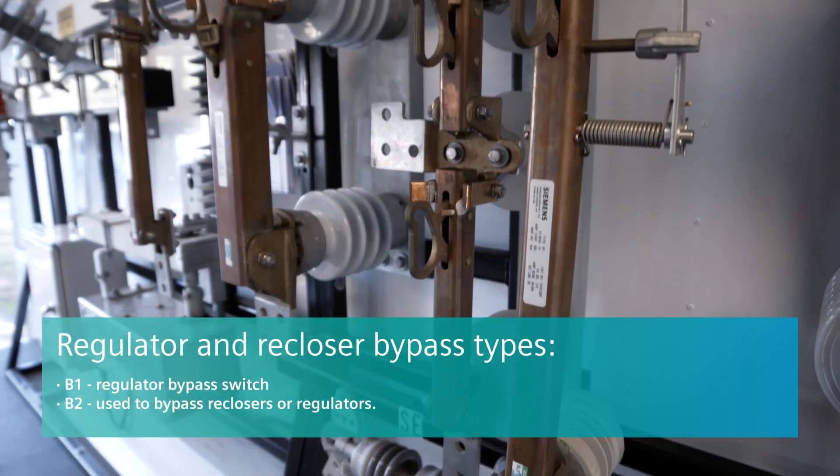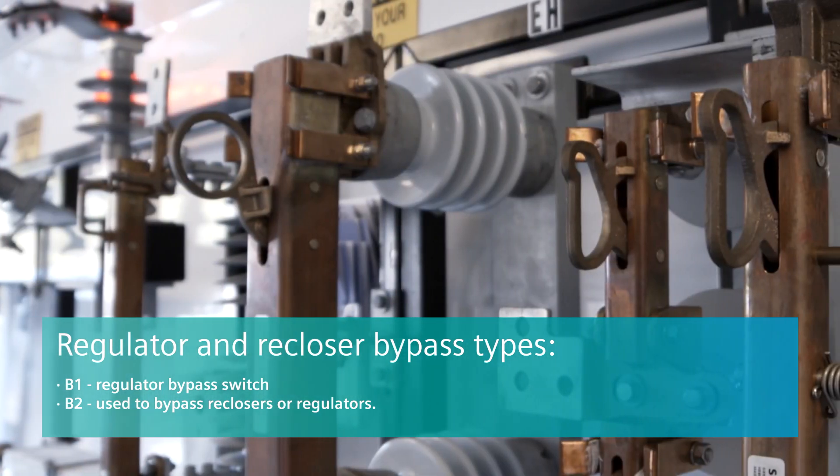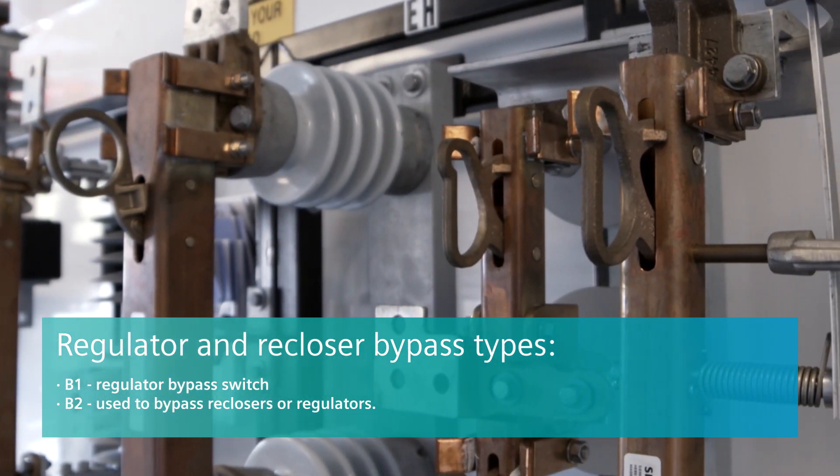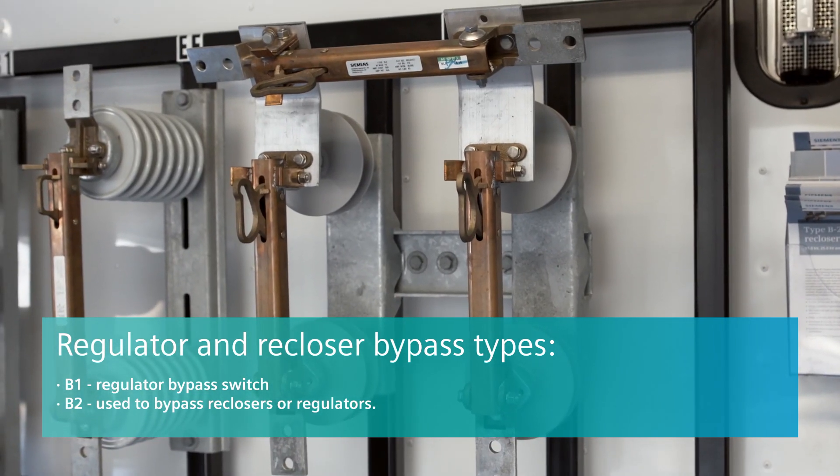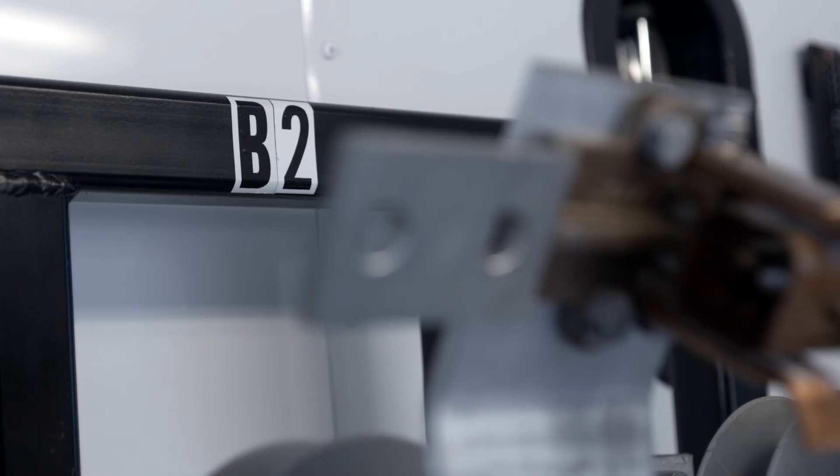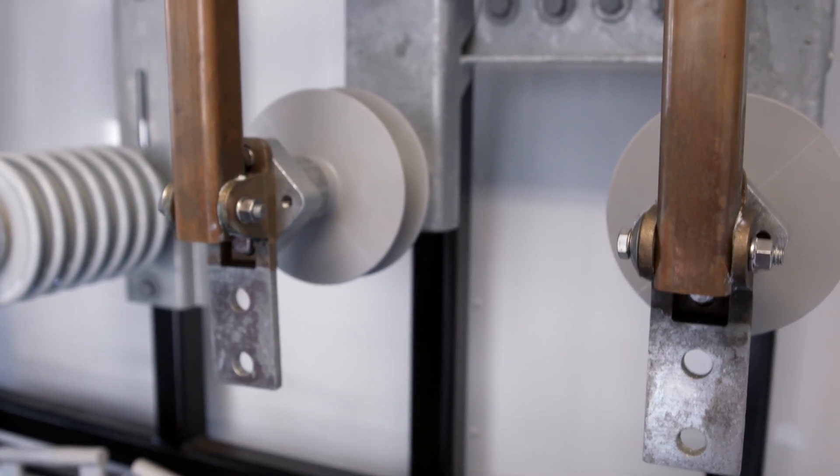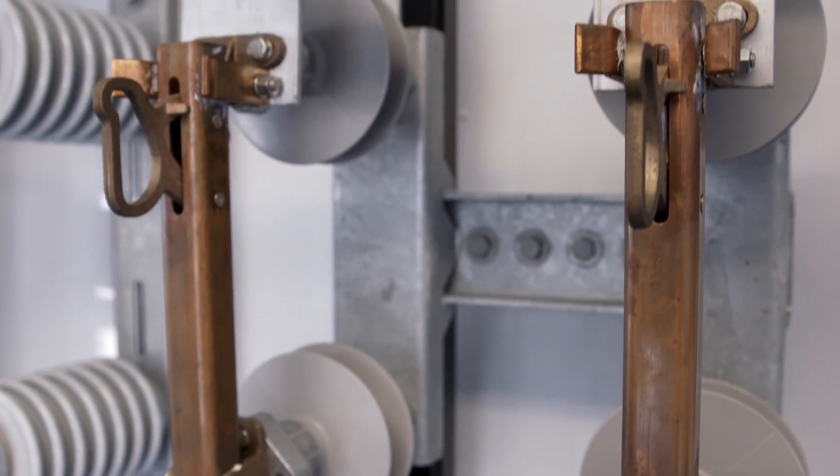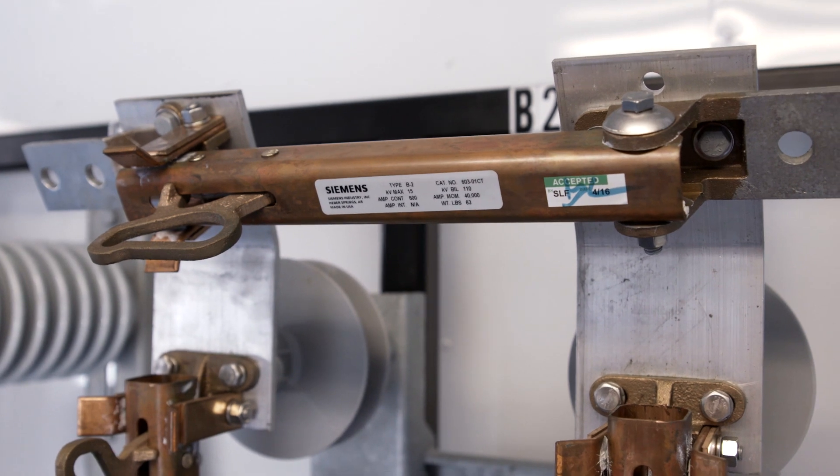Siemens regulator and recloser bypass types B1 and B2 switches allow utilities to bypass equipment such as a regulator or recloser to perform maintenance on a device without interrupting service to customers. Siemens design is a three-pole system. A positive visual check can be performed to verify that the bypass circuit is complete and that the device is visually isolated from the line.